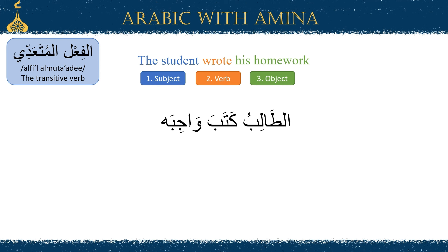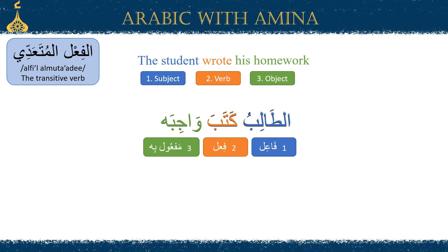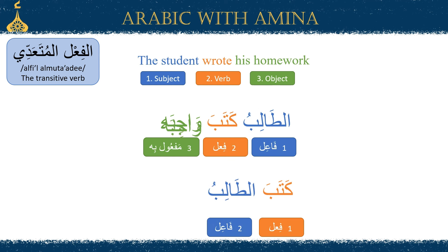Let's see how the word arrangement is in Arabic using the same sentence: الطالب كتب واجبه. طالب is 'the student,' so he is the subject or the fa'il. كتب is the fi'il. واجبه, 'his homework,' is the مفعول به or the object. It has the same word arrangement as English — subject, followed by verb, followed by object. However, Arabic word order is relatively flexible compared to English: we can rearrange the sentence and have the verb in the beginning, starting with the fi'il, followed by the fa'il or subject, with the object or مفعول به last.